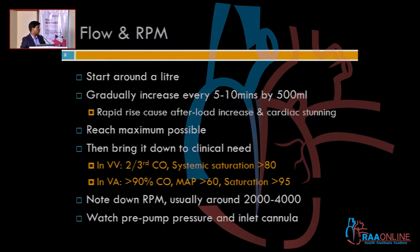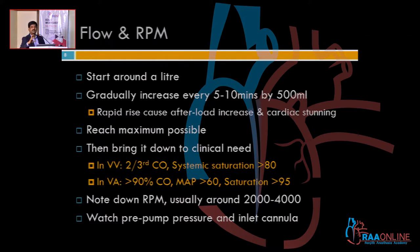In VA ECMO, go to maximum flow and come back, adjusting based on pressure and saturation. You need a mean arterial pressure of around 60 and a saturation of 90% or above, so adjust your RPM and flow accordingly. Don't raise it too fast — in VV ECMO a sudden afterload increase can stun the RV, and the same happens to the LV in VA ECMO.